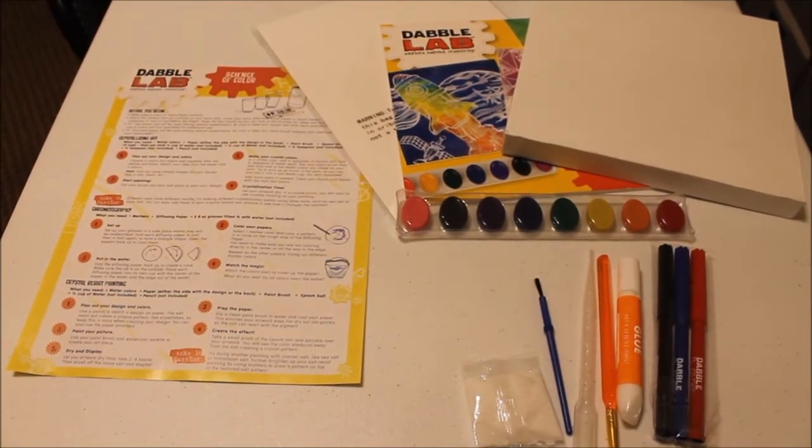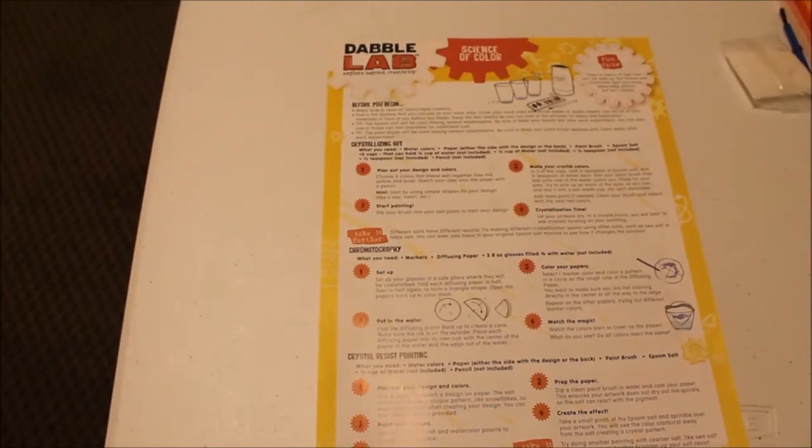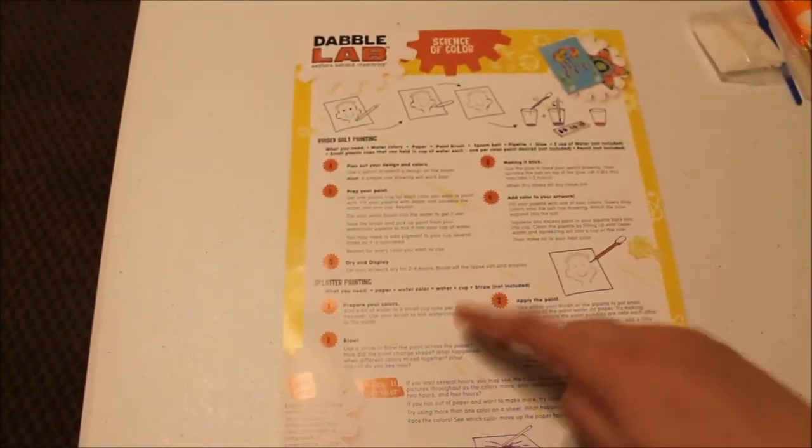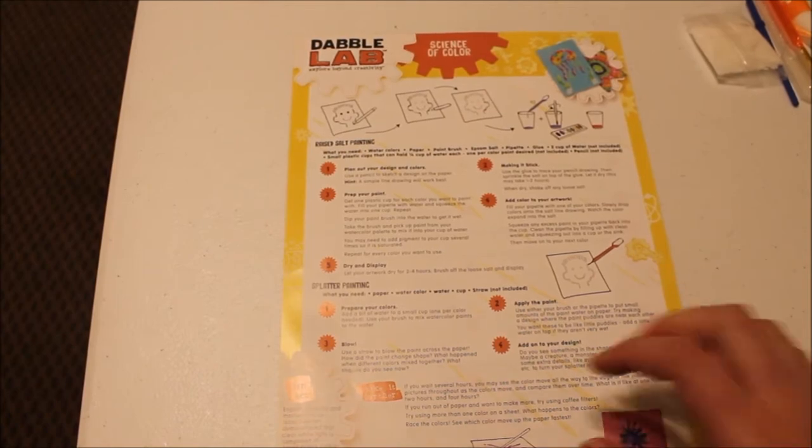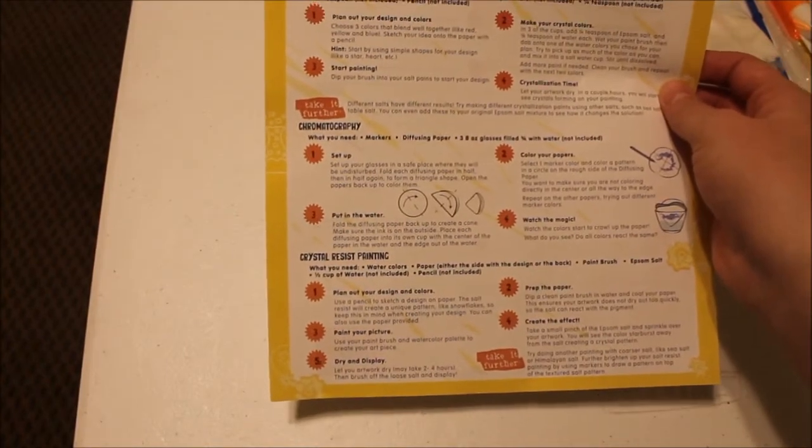This is everything this kit comes with. So this is the directions and it has five different things you can do in this kit. Crystallizing art is the one that I think I'm going to try first.